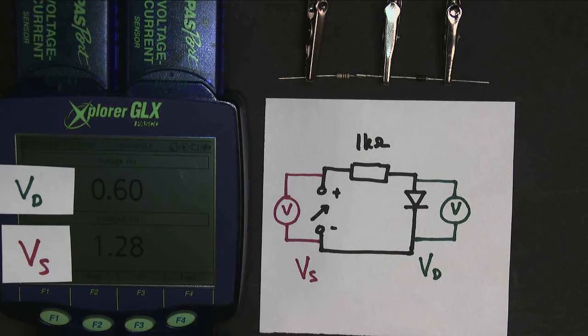And if I keep increasing the voltage to 2 volts and 3 volts, you'll notice that the voltage across the diode remains pretty steady at about 0.7 volts, which is what we're expecting on our previous graph.